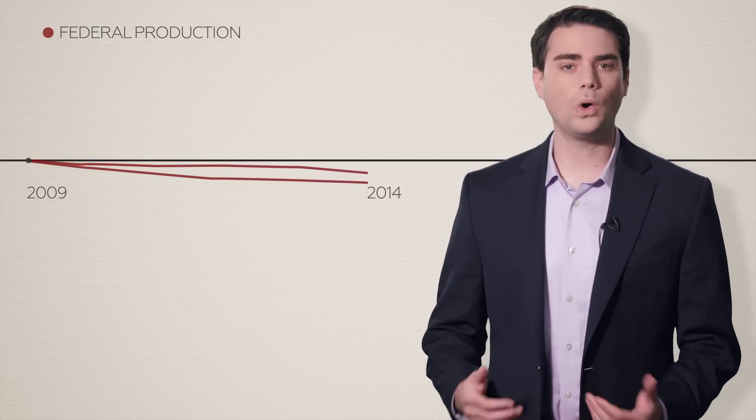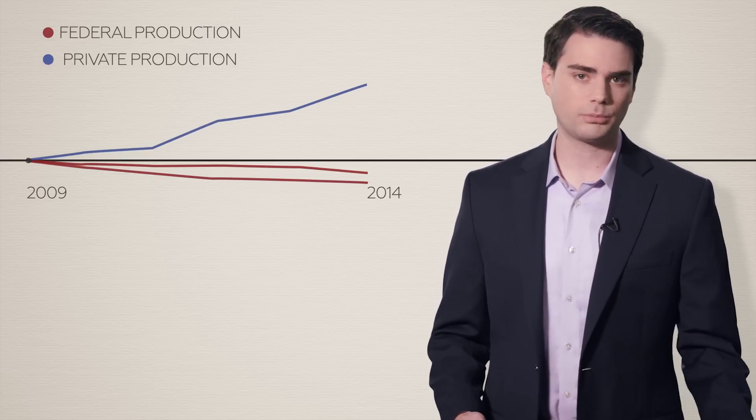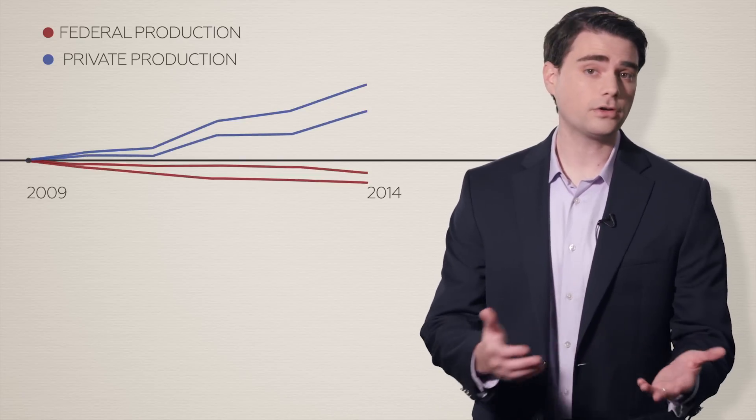By contrast, since 2009, oil production on non-federal land skyrocketed 61%, natural gas production jumped 33%. So it turns out that President Obama's recovery has been riding on the backs of just the folks he despises, those evil frackers who power the engine of America's economy.